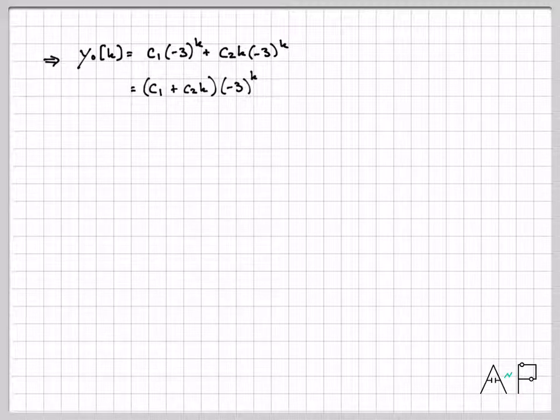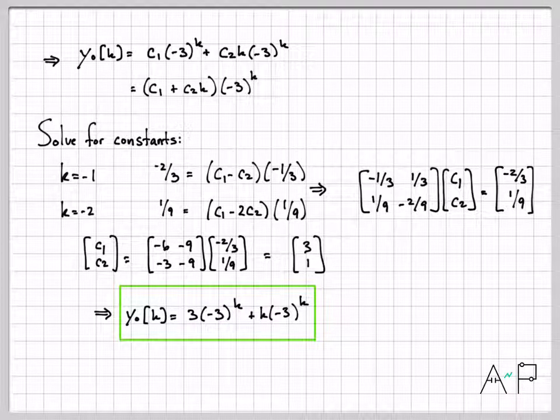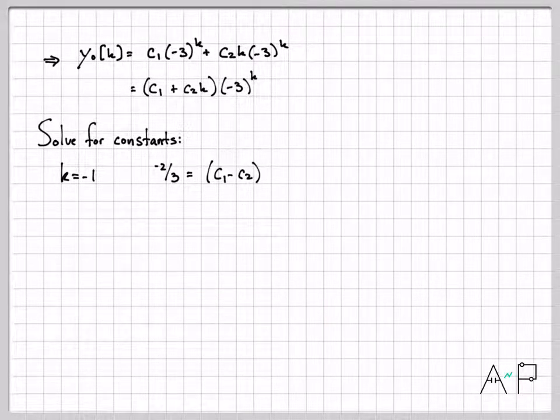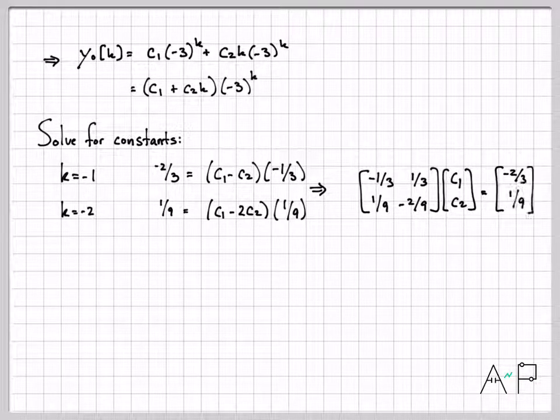We know the form of our zero input response. The only thing left to do now is solve for the unknowns, and we always solve for those unknown constants using our initial conditions. We were given a value at time minus one - the output was equal to -2/3. So I know that -2/3 has to equal this equation with k replaced with -1. And (-3)^(-1) is obviously -1/3. The other equation comes from time minus two where our initial condition was 1/9. Replace all the k's with the value of -2 and you end up with this equation. If I multiply everything out and collect my coefficients I end up with two equations: -1/3 c₁ + 1/3 c₂ = -2/3 and 1/9 c₁ - 2/9 c₂ = 1/9.